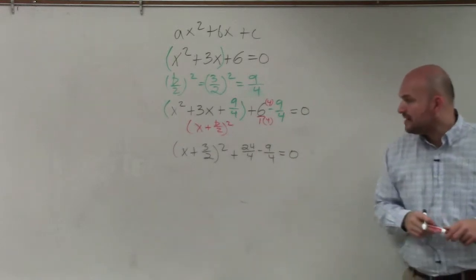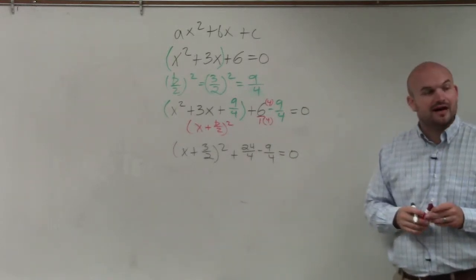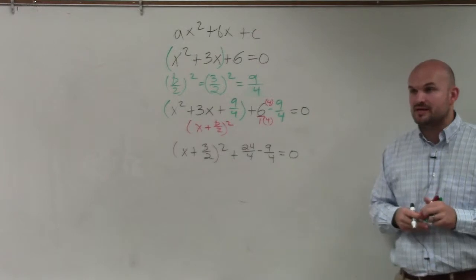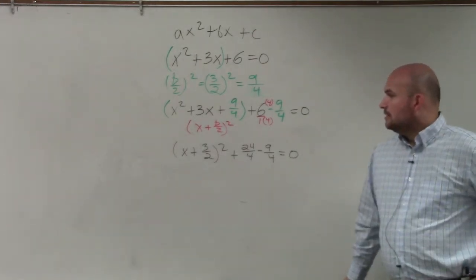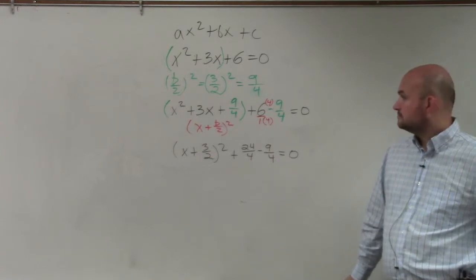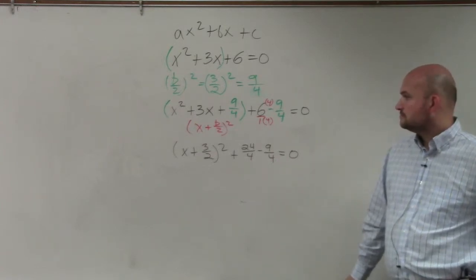24 minus 9 is going to be 24 fourths minus 9 fourths is going to be? At that point, since you made the 6 over 1 a 24 fourths, you could just make the other one the same right now.